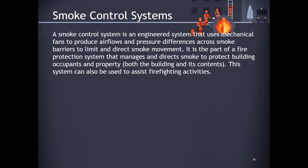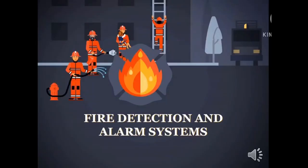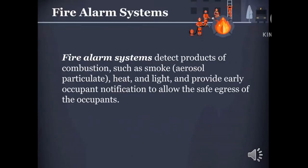Smoke control systems: A smoke control system is an engineered system that uses mechanical fans to produce air flows and pressure differences across smoke barriers to limit and direct smoke movement. It is part of a fire protection system that manages and directs smoke to protect building occupants and property, and can also assist firefighting activities. Fire alarm systems detect products of combustion such as smoke, heat, and light, and provide early occupant notification to allow safe egress.